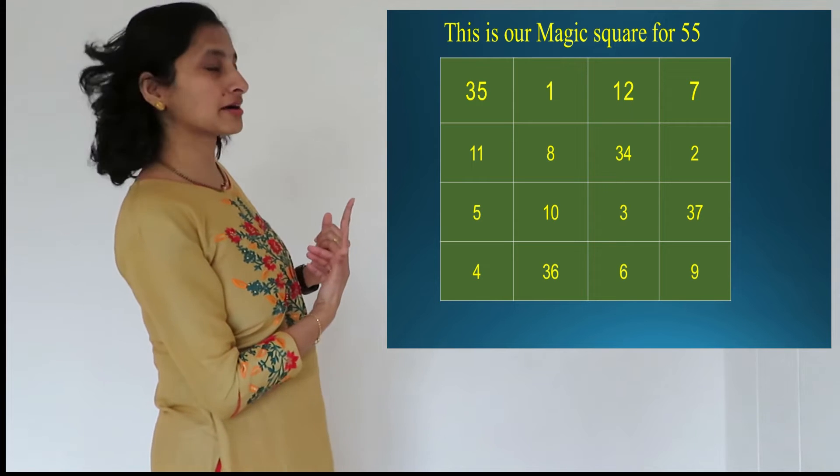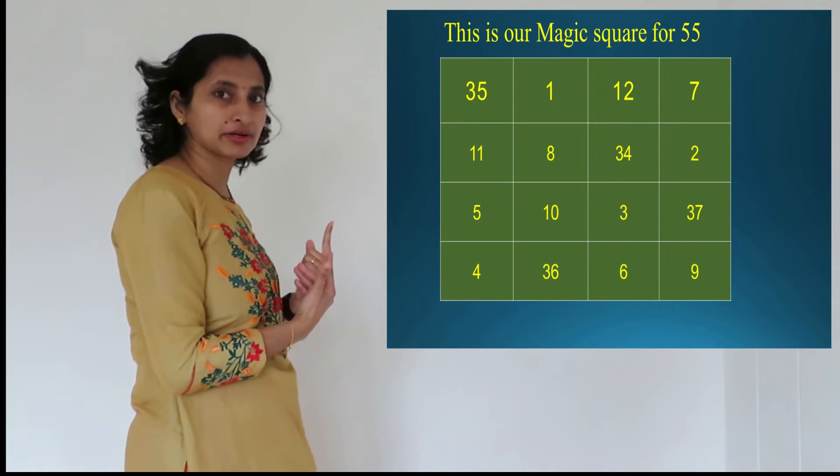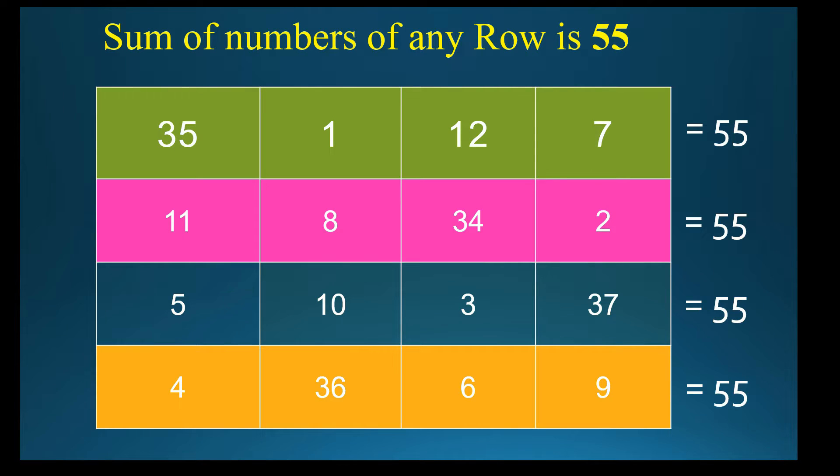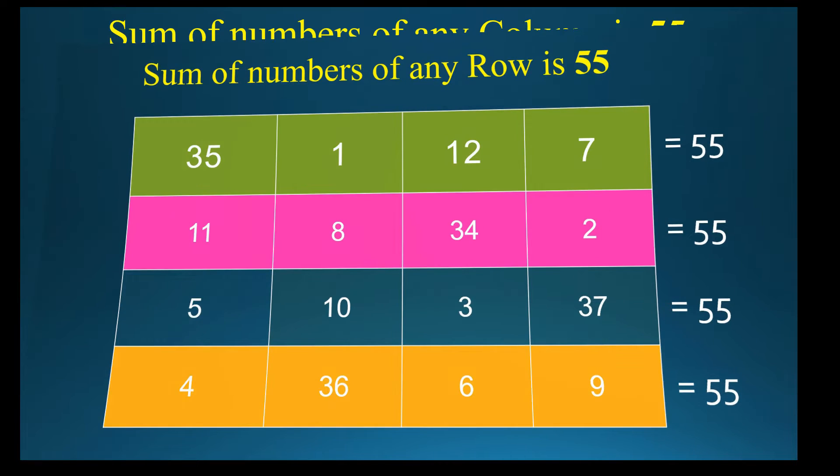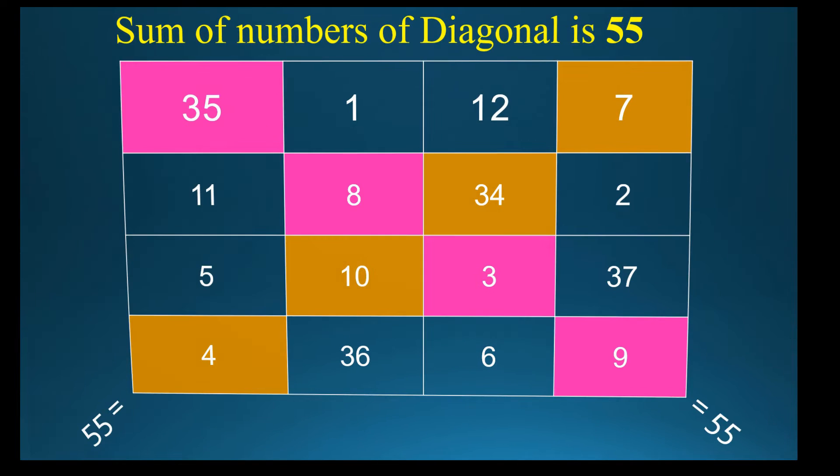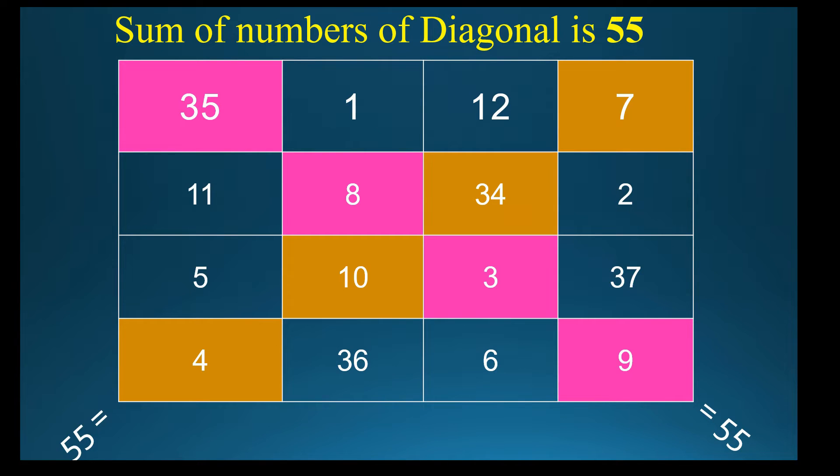So this is the magic square for the number 55. What is the magic in this? If you take any row, add up, you will get 55. If you take any column, add, again you will get 55. If you take diagonals, add, again you will get 55.